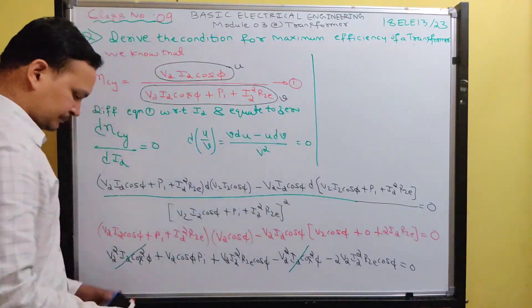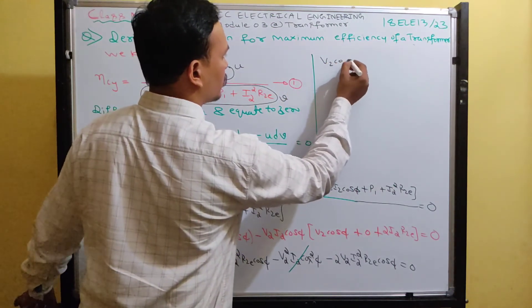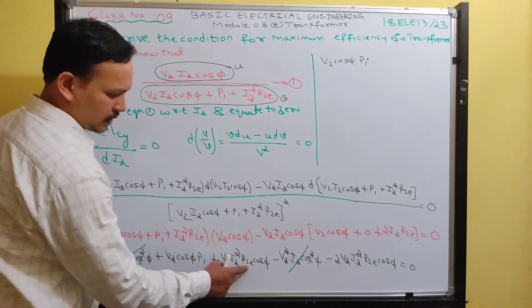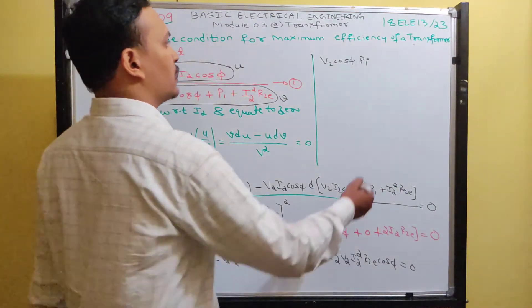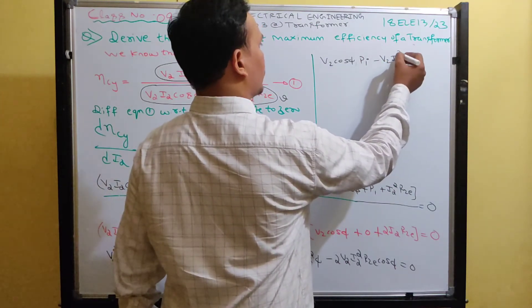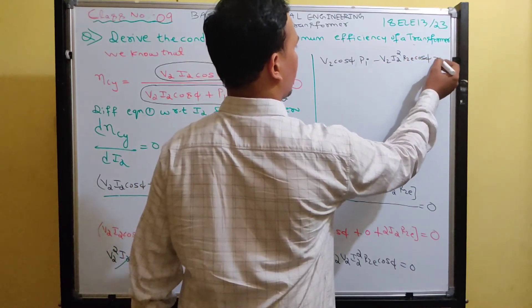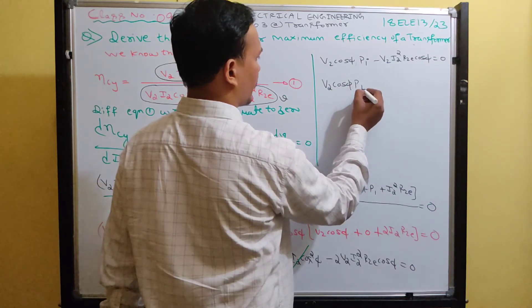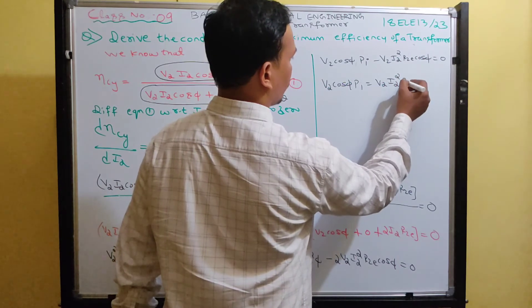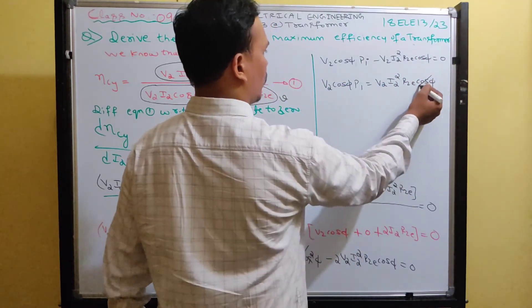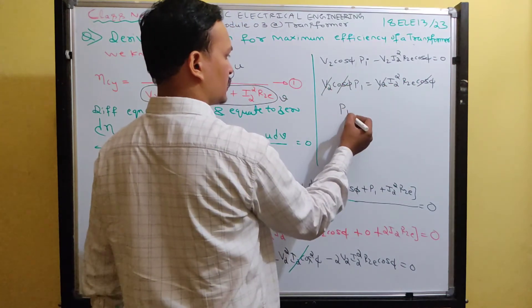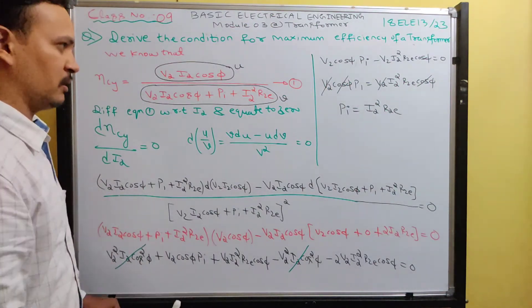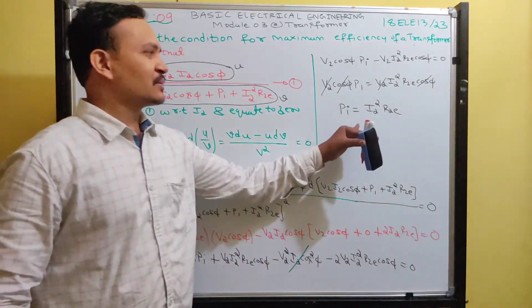After cancellation we are left with: V2·cos φ·Pi minus V2·I2²·R2e·cos φ = 0. Taking the negative term to the right hand side: V2·cos φ·Pi = V2·I2²·R2e·cos φ. Now cos φ cancels and V2 cancels on both sides, giving: Pi = I2²·R2e.